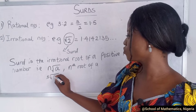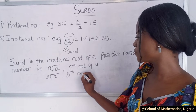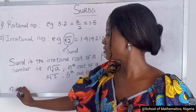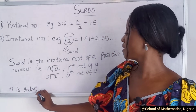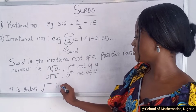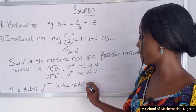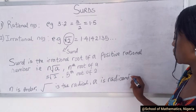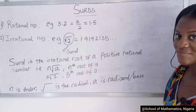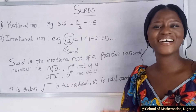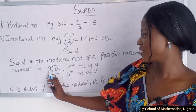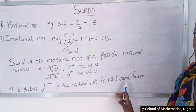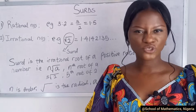In a case where you have five roots, it's called the fifth root of two. Also note that n is called the order. This root sign is called the radical. Then a is called the radicand, or the base. So n is the order, this sign is the radical, and a — the value inside the radical — is called the radicand or the base.